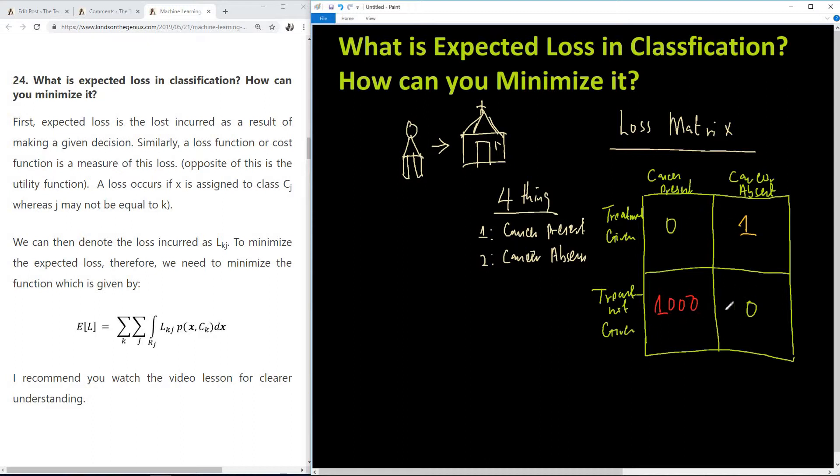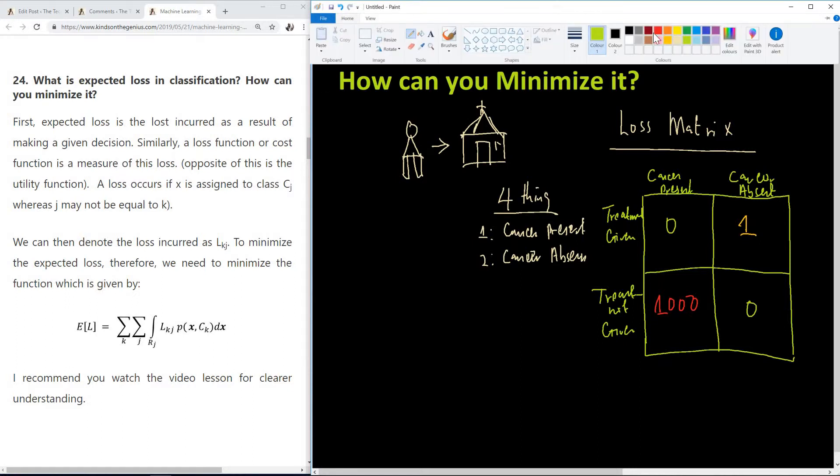Let's now look at a formal definition of expected loss. It is loss incurred as a result of making a given decision. Similarly, a loss function or cost function is a measure of this loss. Opposite of this is a utility function. A loss occurs if x is assigned to class cj where j may not actually equal k.